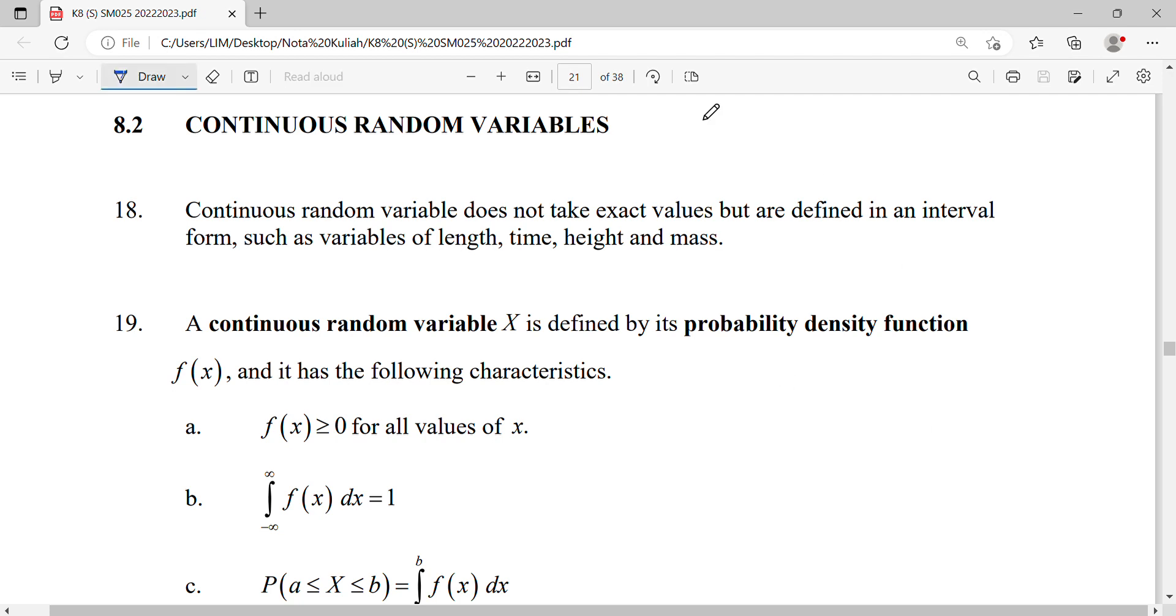We continue this class on 8.2 continuous random variables. A continuous random variable does not take exact values but is defined in an interval form, such as quantities like length, time, height, and mass.